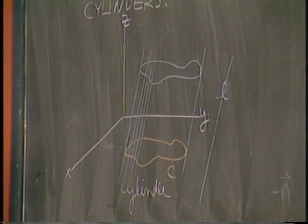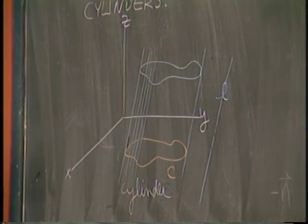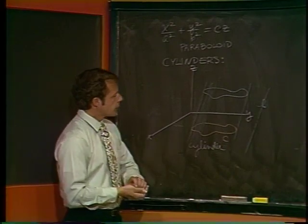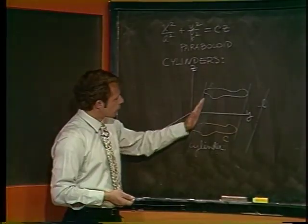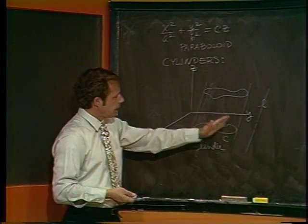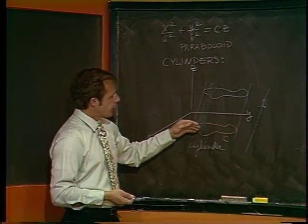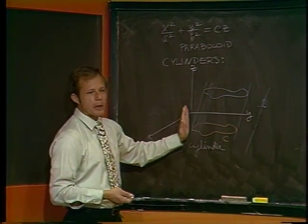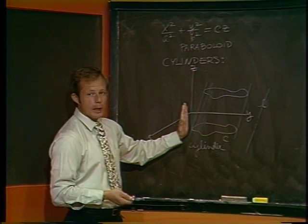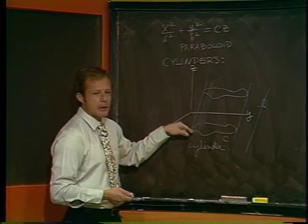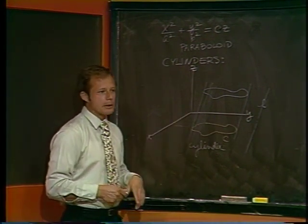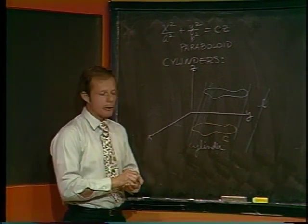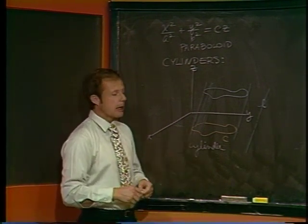The cylinders we actually deal with pretty regularly are so-called right cylinders where the rulings of the surface are perpendicular to the plane of the curve. That's a right cylinder. And of course, if this happened to be a circle, you'd have a right circular cylinder, which everyone's familiar with. In fact, most people think of that as being a cylinder, but it is more general.